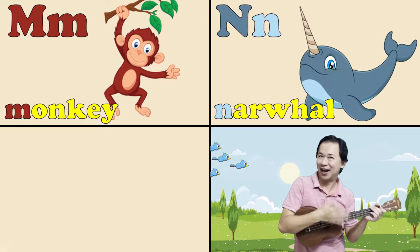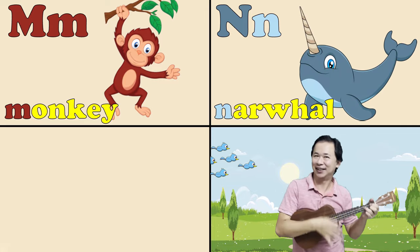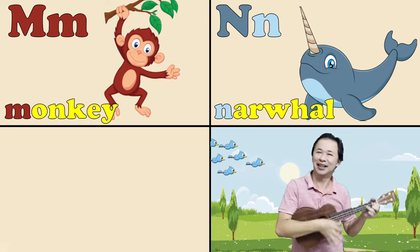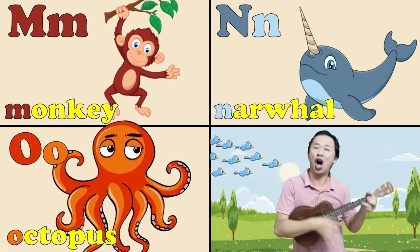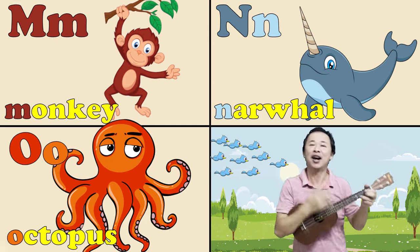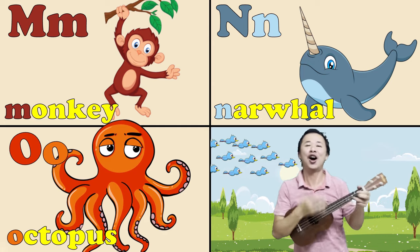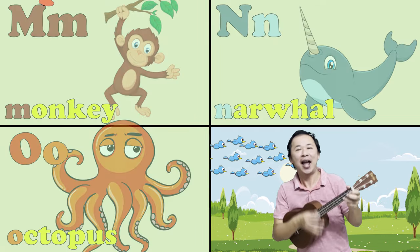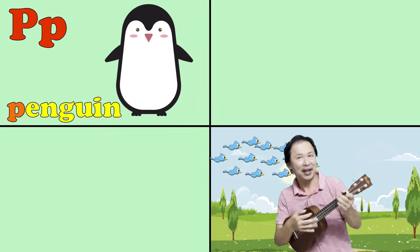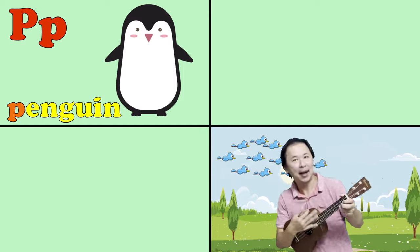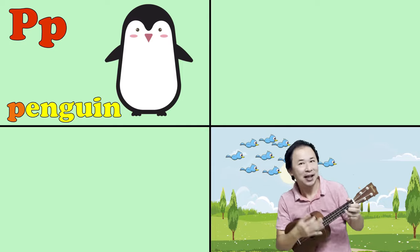N is for narwhal, n. O is for octopus, o. P is for penguin, p.